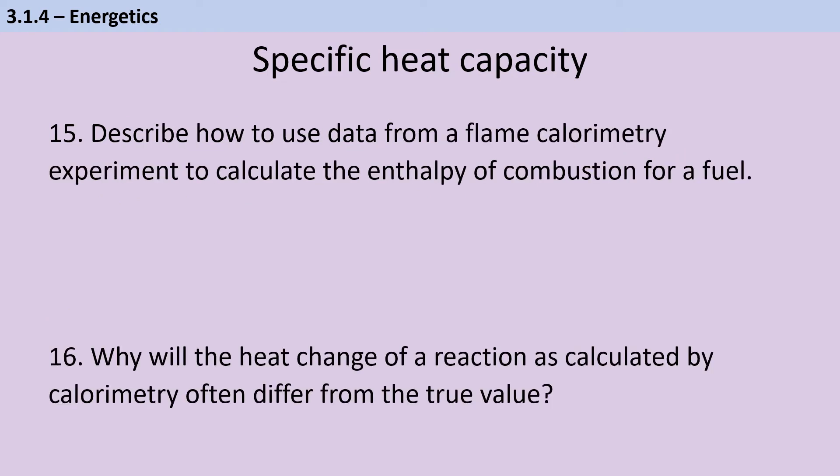The first step in processing the data from a flame calorimetry experiment is going to be to work out how much energy in total has been released. For that, we need the equation we just met. Q is mc delta T, where M is the mass of the water, C is the specific heat capacity of the water, and T is the temperature change.